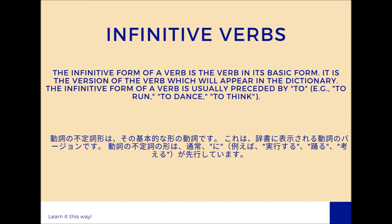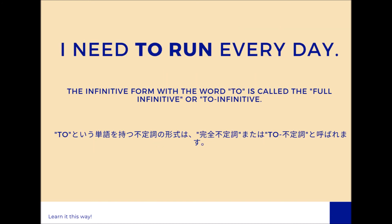In the examples I mentioned in this video, I had been talking about the infinitive. But what are infinitive verbs? The infinitive form of a verb is a verb in its basic form — it is the version of the verb which will appear in the dictionary. The infinitive form is usually preceded by 'to,' for example: to run, to dance, to think. However, it is not always preceded by 'to.'